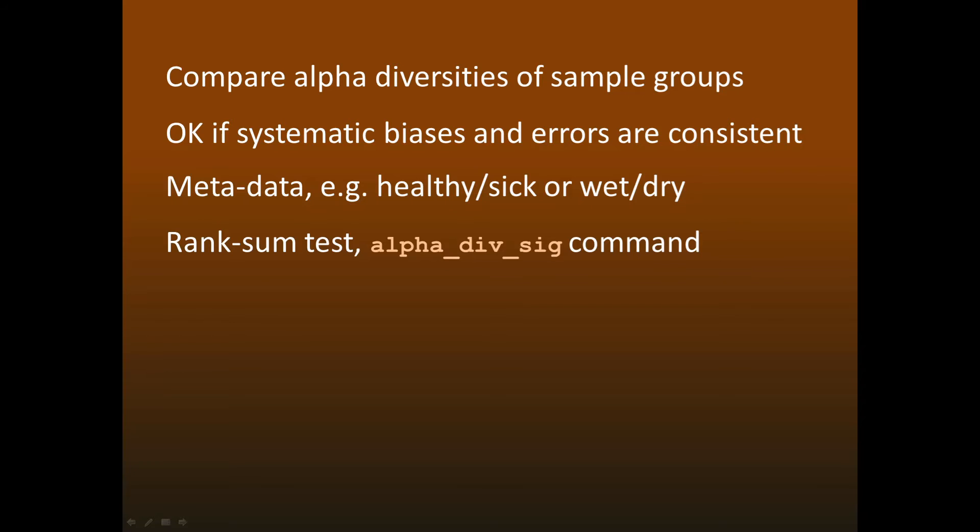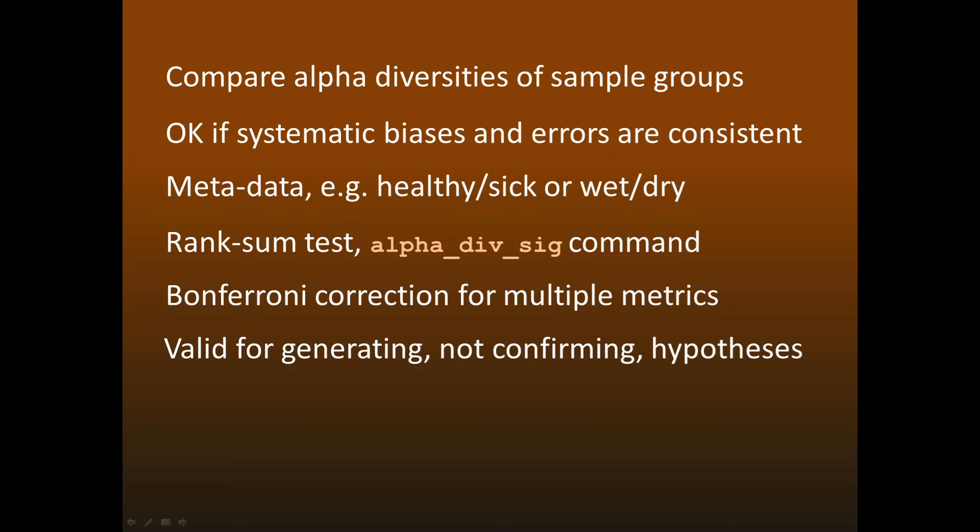In USEARCH, this is done with the alpha_div_sig command. One pitfall to watch for is checking several different metrics to see if one of them gives a low p-value. For example, testing both richness and Shannon entropy. If you do this, then you should apply the Bonferroni multiple test correction. While this approach seems reasonable, it's still subject to systematic errors which are not well understood. This means that it's not possible to get robust p-values and therefore this methodology should be viewed as generating plausible hypotheses rather than well-tested conclusions.